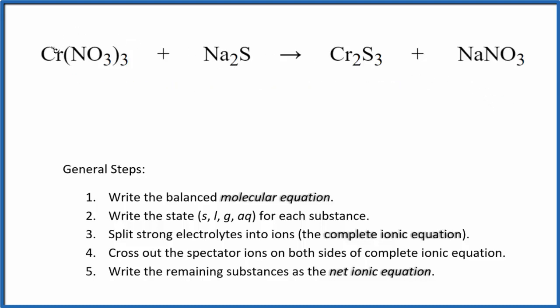Let's start with the chromiums. We have 1 here and 2 here, so we're going to put a 2 in front of the chromium(III) nitrate. Now we have 3 of these nitrates times 2, so we have 6 of them. We need to put a 6 over here. That balances the nitrates. We have 6 sodiums, let's put a 3 here. Sodiums are balanced. 3 sulfur atoms, 3 sulfur atoms. This is the balanced molecular equation.